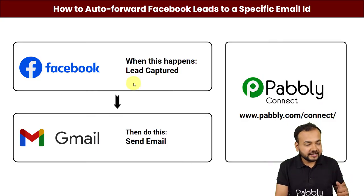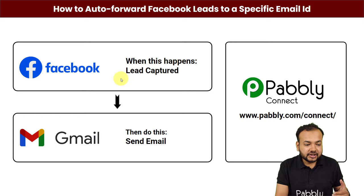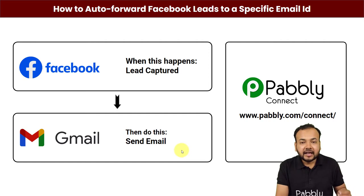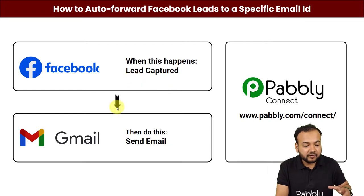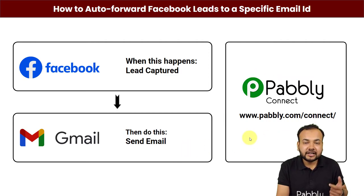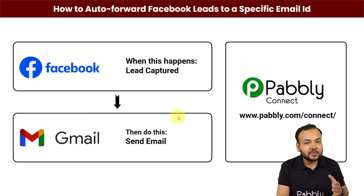This will be the flow of this automation. You just have to capture a lead from Facebook Lead Ads and the details of that lead will be delivered to any specific team member automatically through your Gmail account as an email. This will help you save time — you don't have to manually sort out lead details or send emails manually. To make this happen, we are using Pabbly Connect, which is an integration and automation tool.